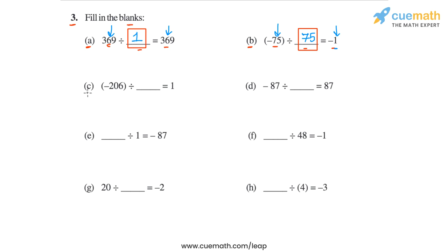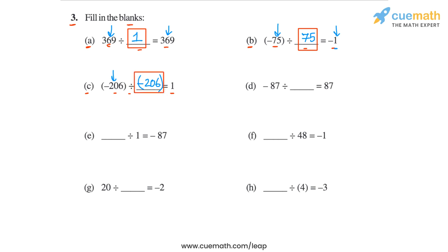Then in part c, we have minus 206 divided by what is equal to 1. We know that any number divided by itself gives us 1. So in this case, we can directly say that the divisor will be equal to the dividend, which is minus 206. So the answer for part c is minus 206.